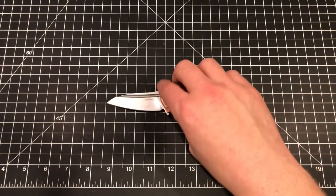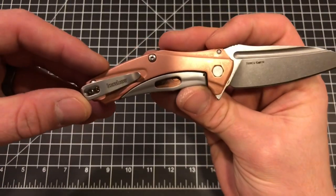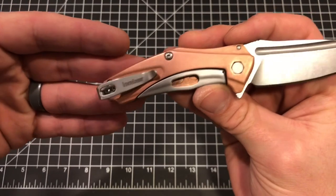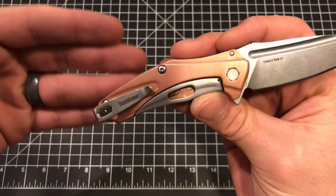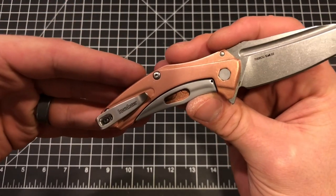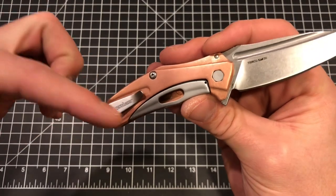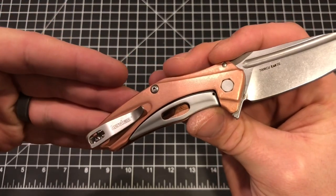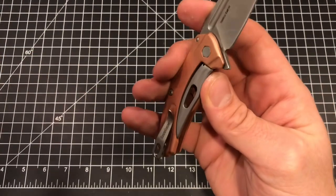So locking mechanism, it's going to be a subframe lock. So the frame itself is copper, obviously, which is a very malleable metal, and so they put the steel subframe lock in there to give it that strength.